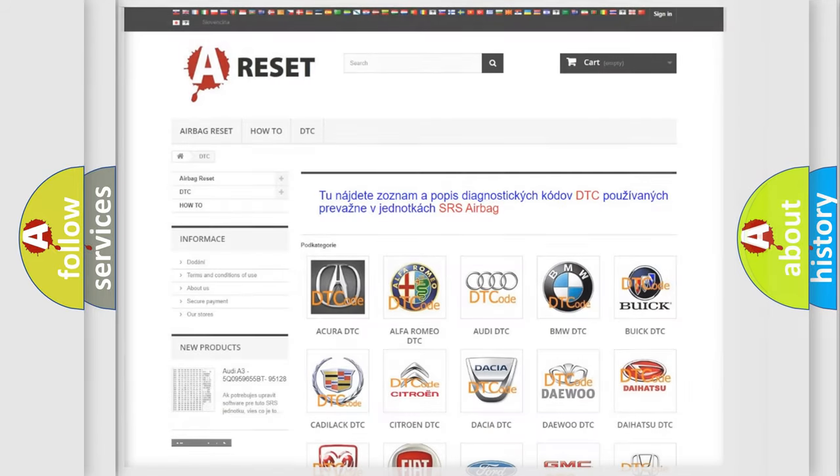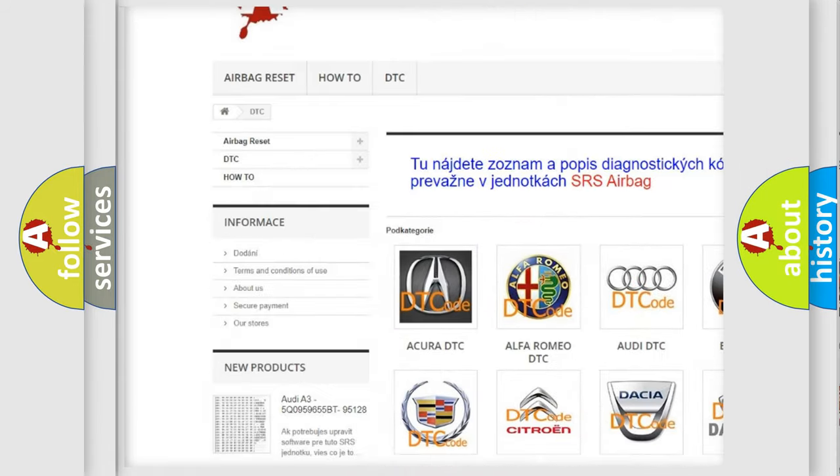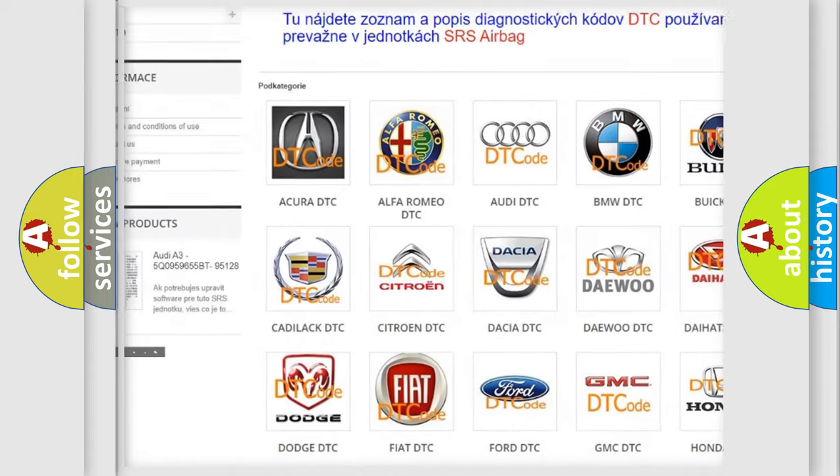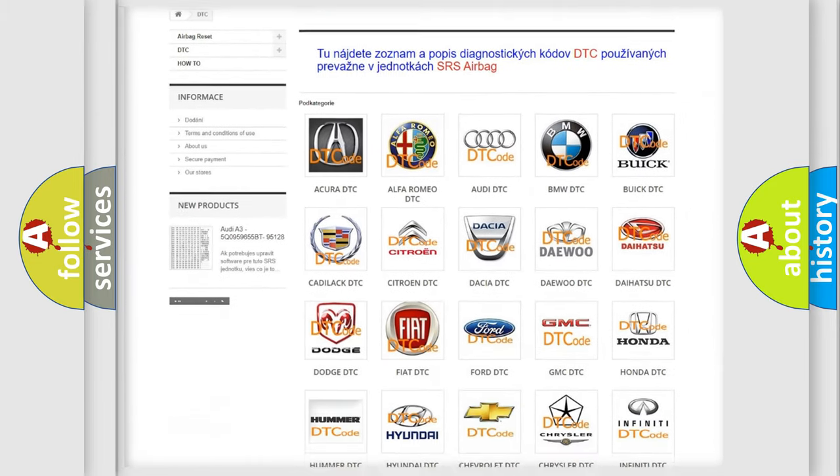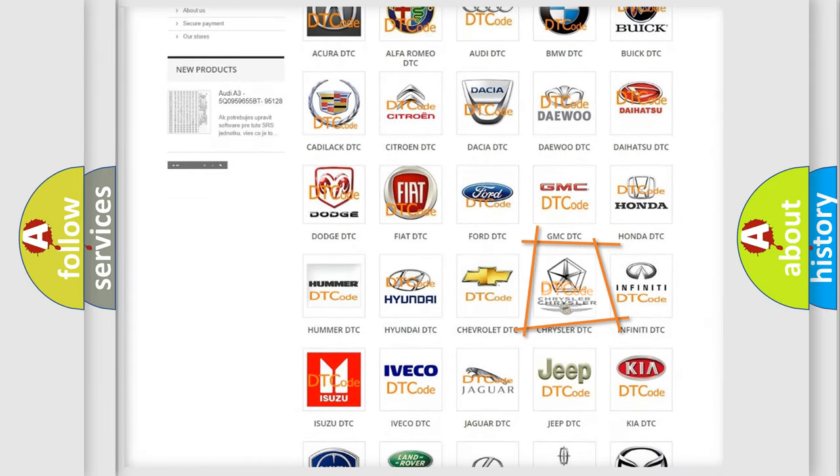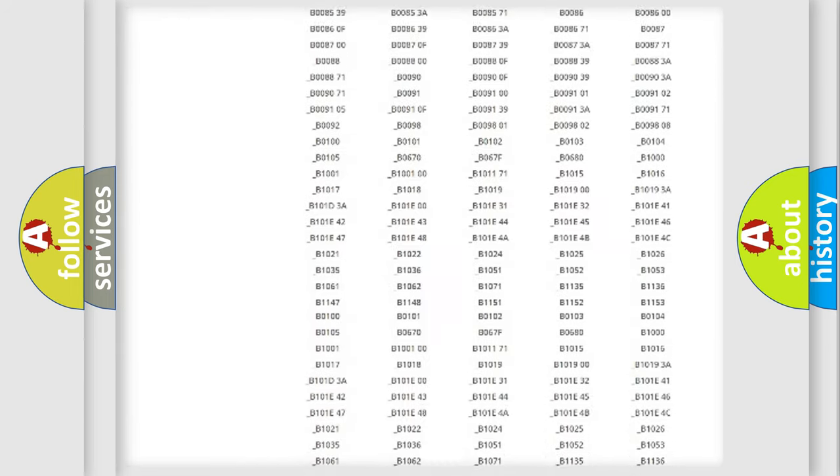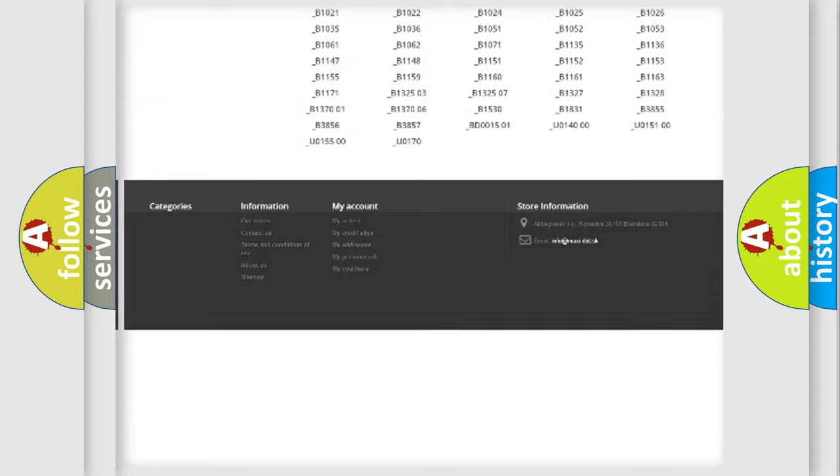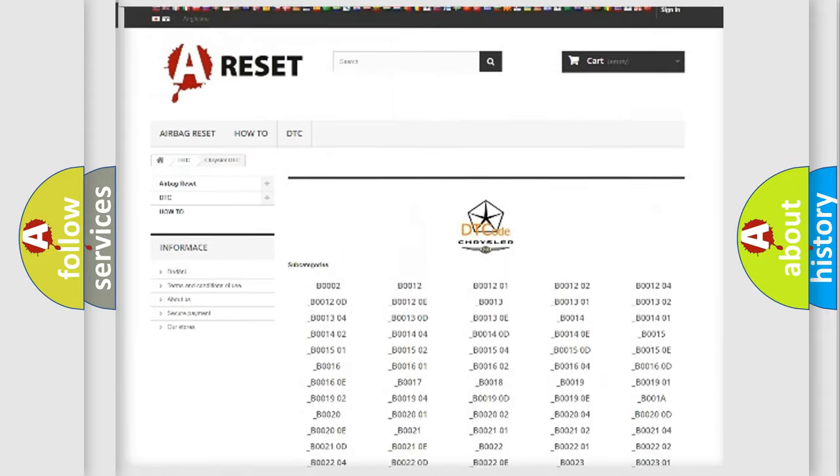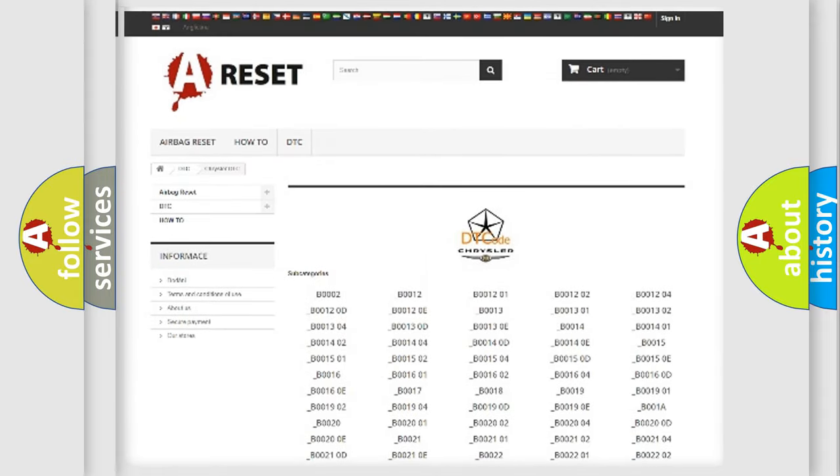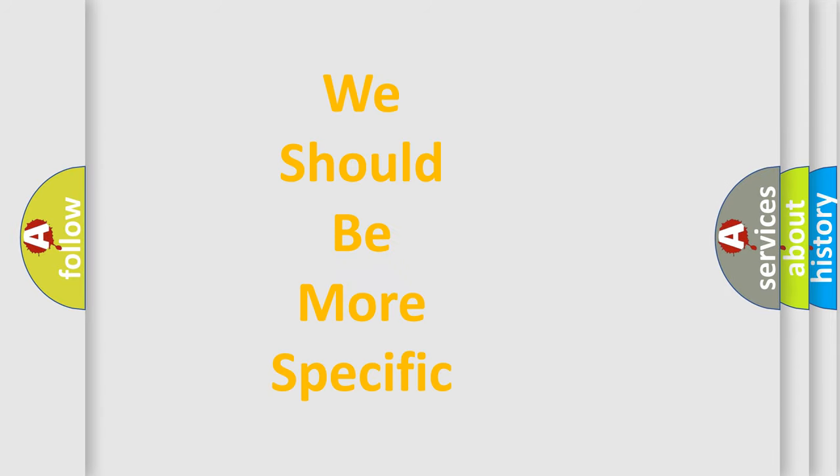Our website airbagreset.sk produces useful videos for you. You do not have to go through the OBD2 protocol anymore to know how to troubleshoot any car breakdown. You will find all the diagnostic codes that can be diagnosed in Chrysler vehicles, and many other useful things.